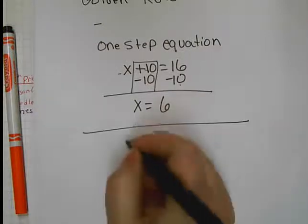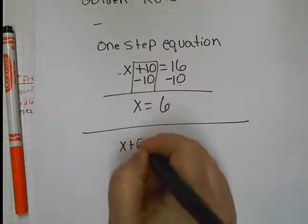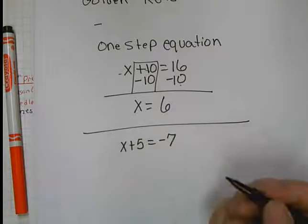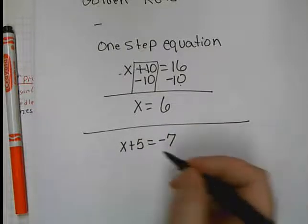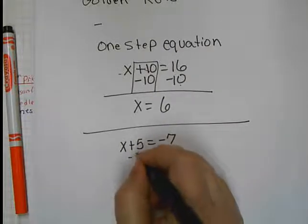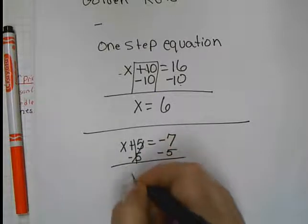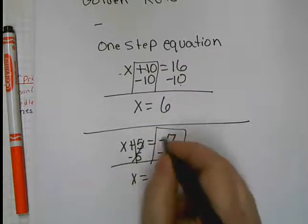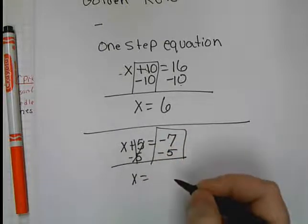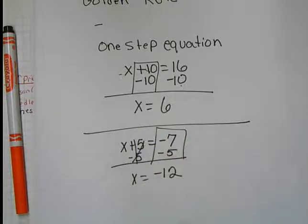All right. Let's try some. X plus 5 equals negative 7. What am I going to do to get rid of that plus 5? Subtract 5. These cancel out. X equals, now this is a negative 7 and a negative 5. Combine them. What do you get? A negative 12.